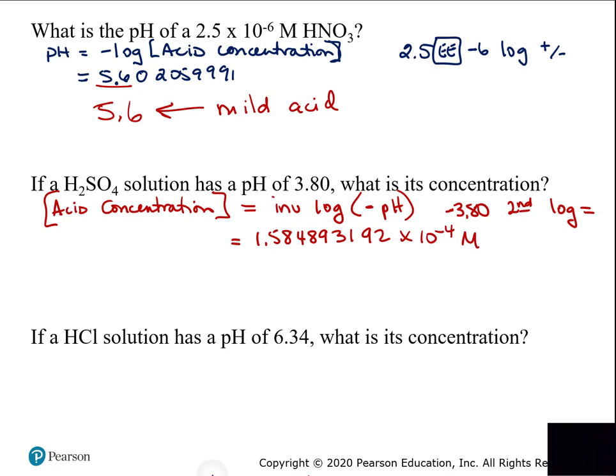Is a pH of 3.80 a strong acid, mild acid, neutral, strong base, or mild base? It's a mild acid — anything above 3 is a mild acid. Think about the pH scale: when you see a pH value, think about what it tells you about the amount of hydrogen ions. Zero to 3 is strongly acidic; 3 to 6.99 is mildly acidic; 7 is neutral; 7.01 to 10 is mildly basic; 10 to 14 is strongly basic.